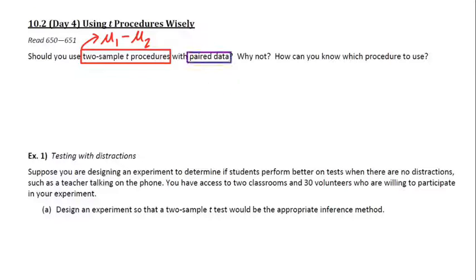Paired data typically goes with data from a matched pairs experiment. So how do I know which one to use and when to use it?